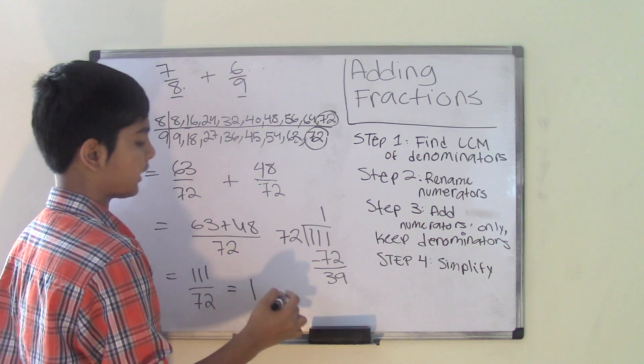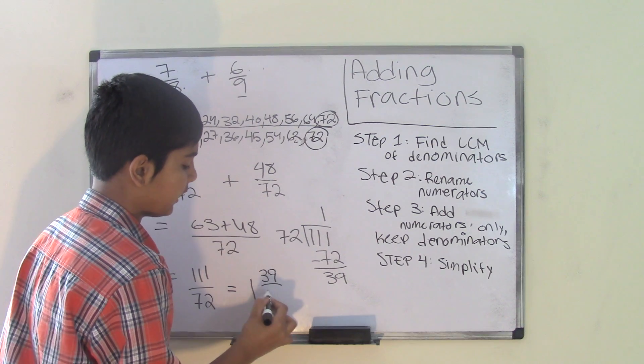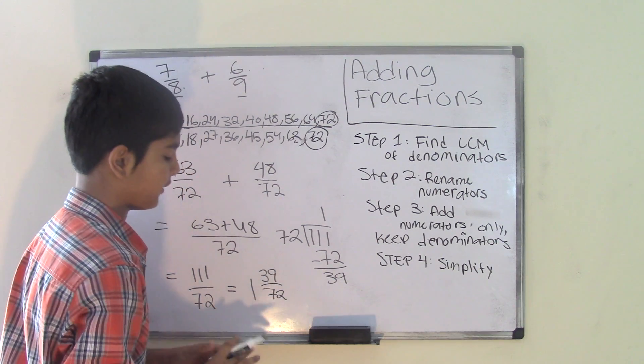Then we subtract and we get 39. So our mixed number is going to be, 1 is going to be our whole number. 39 is going to be the numerator, and 72 is going to be the denominator.